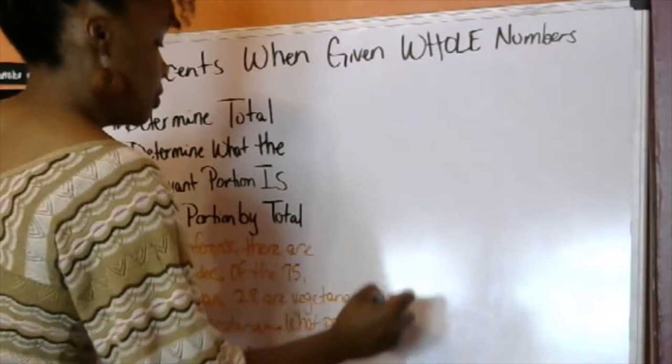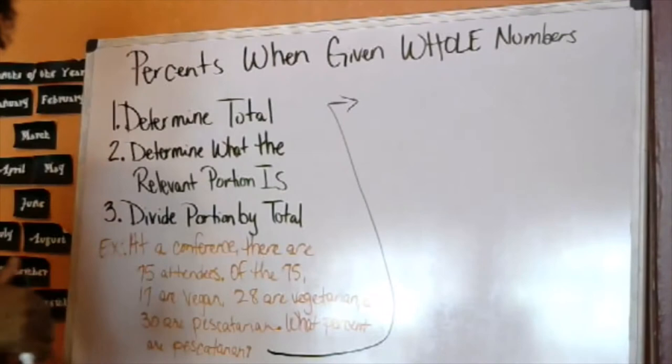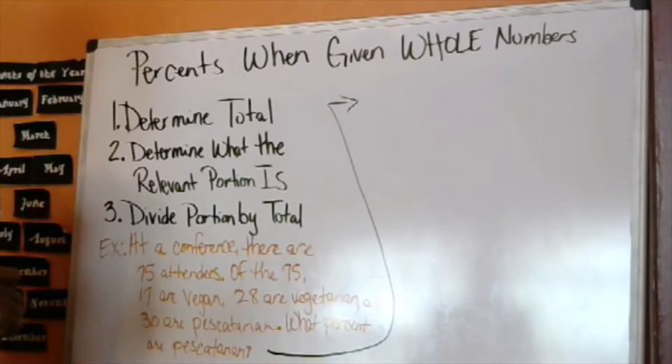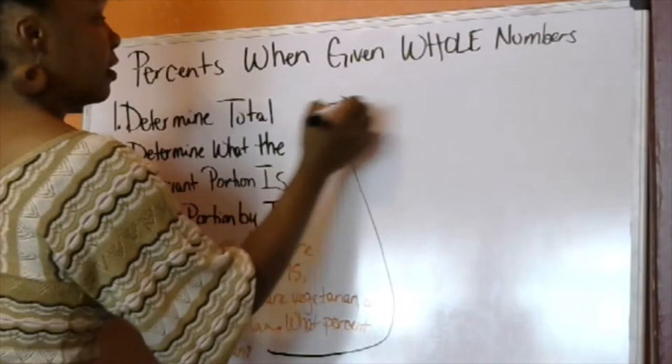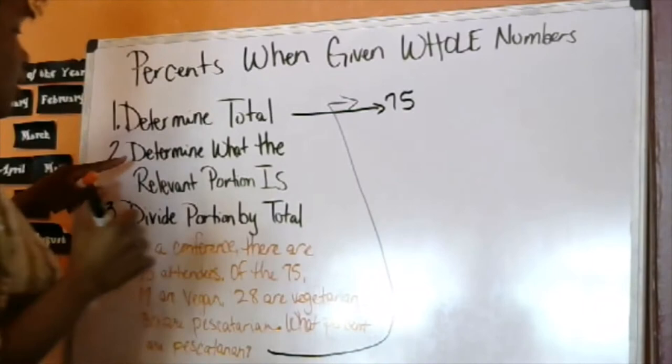So, using these steps, we are going to find out what percent are pescatarian. We've determined our total. There are 75 attendees, so 75 is our total.